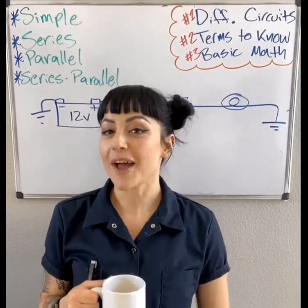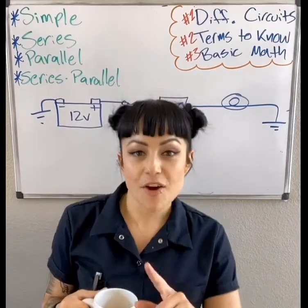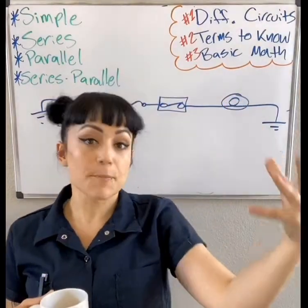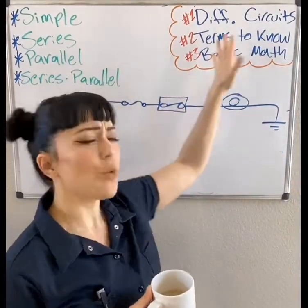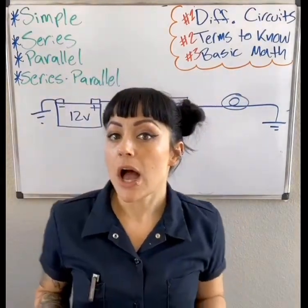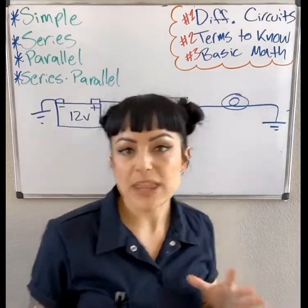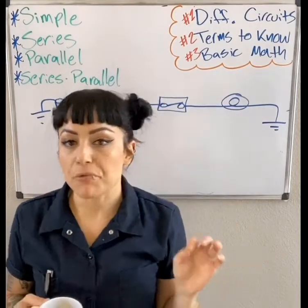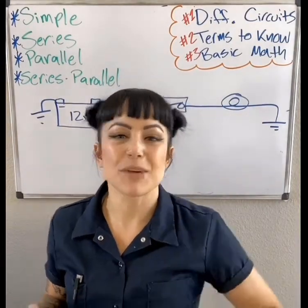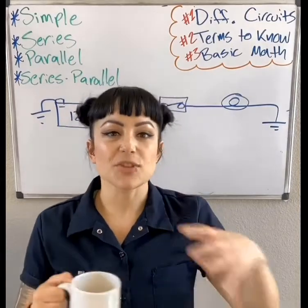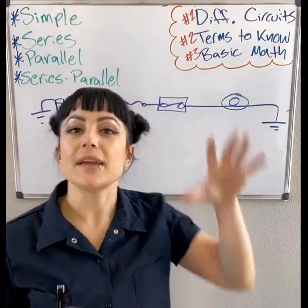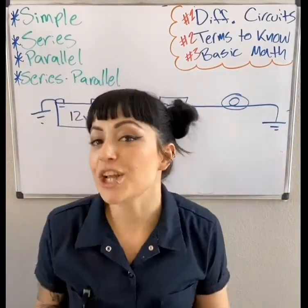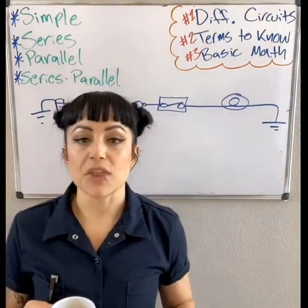Hey everybody! Welcome to video 5 of the basic electrical series. In this video we're going to talk about different types of circuits — series, simple circuits, parallel circuits, series-parallel. We're going to get into terms you'll want to know for the future, like total circuit amperage and how to calculate it. We're going to use basic multiplication and division with easy numbers. We'll calculate amperage based on given readings for voltage and resistance, utilizing Ohm's law.